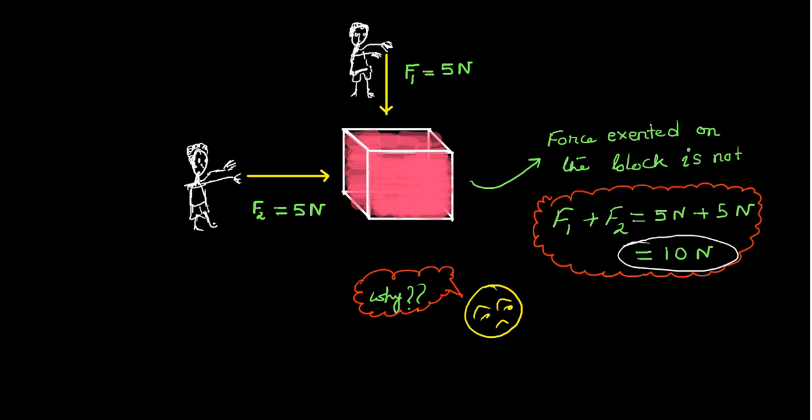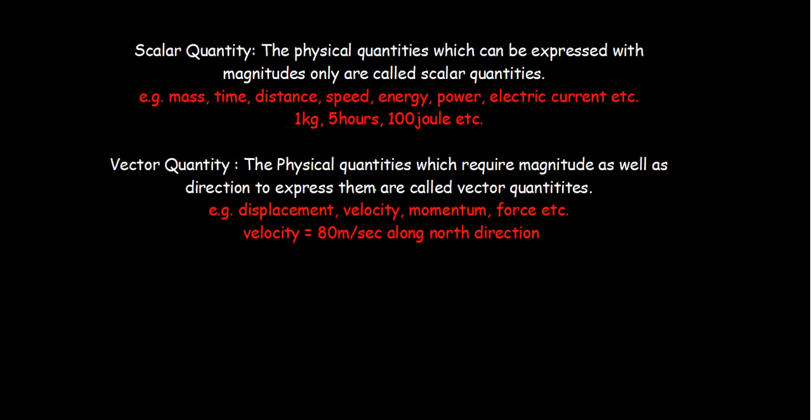The rule of addition seems inconsistent in both examples. Physical quantities like time and force can be divided into two categories: scalar quantity and vector quantity. A scalar quantity is one which can be expressed with magnitude only. Magnitude tells us how large or small the quantity is — for example, one kg, five hundred joule. Mass, time, distance, speed, energy, and power are examples of scalar quantities.